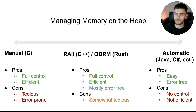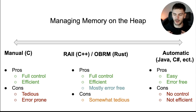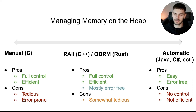When it comes to managing memory on the heap, we can think about the different strategies along a spectrum. On one extreme, you have manual memory management, where the programmer allocates and deallocates memory manually. An example of this would be the C programming language.